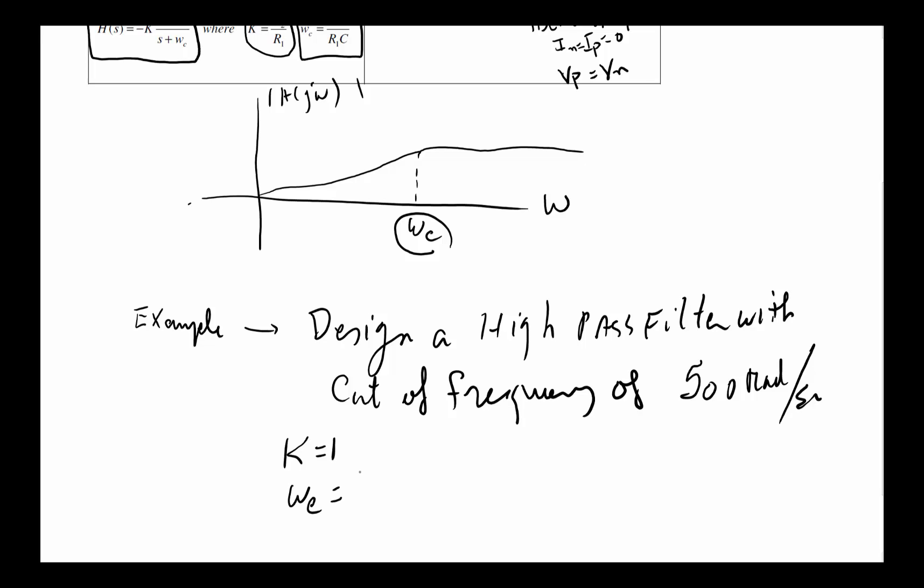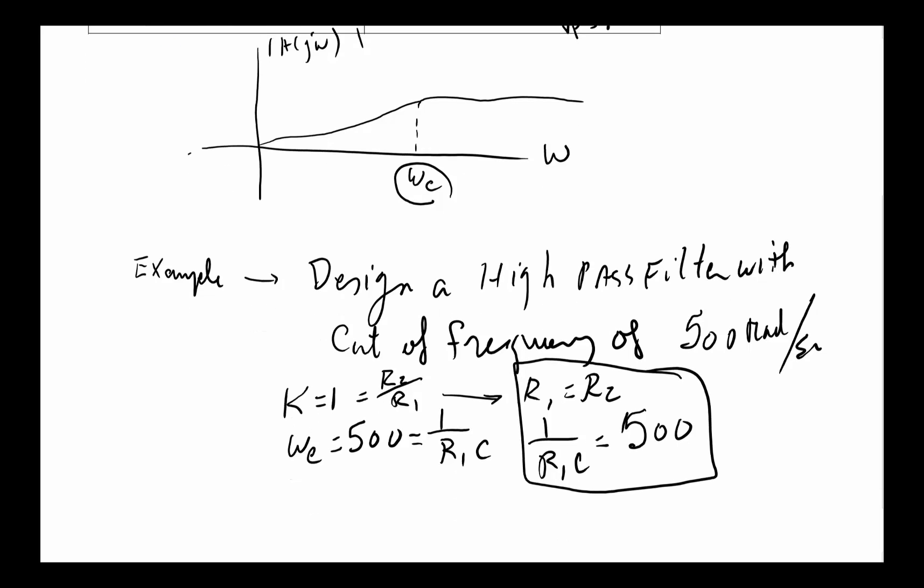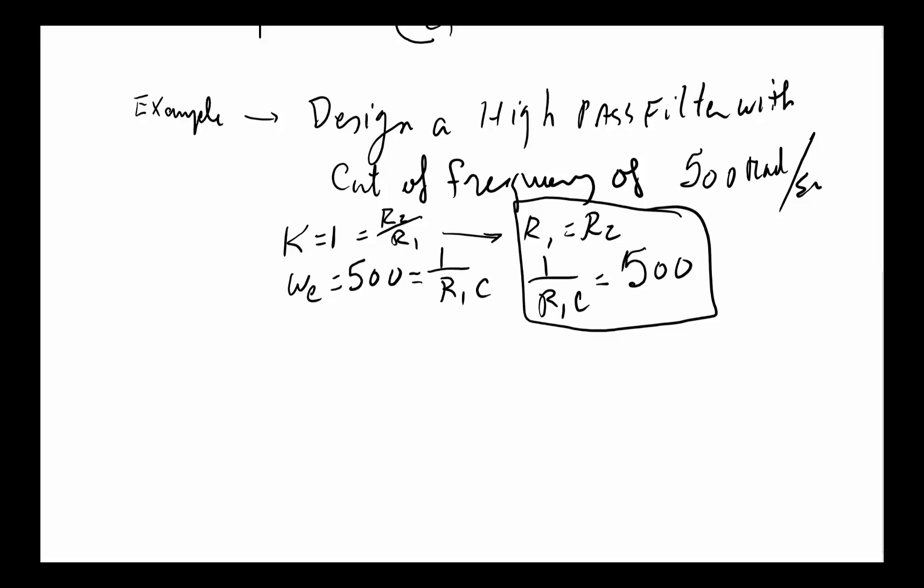Maybe they didn't give us a gain, so we're going to assume the gain is equal to 1. We know ωC equals 500, and from earlier we know that gain is R2 over R1, which tells us R1 has to equal R2. And ωC equals 1 over R1C, so 1 over R1C must equal 500.